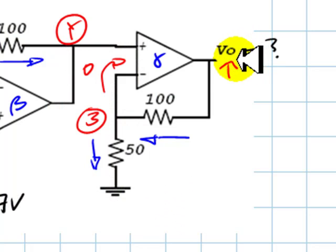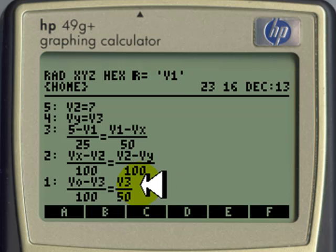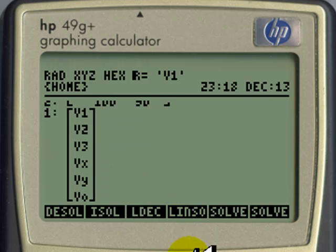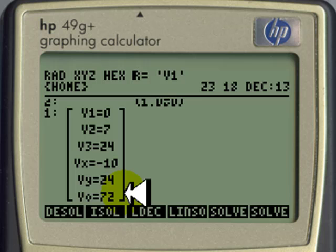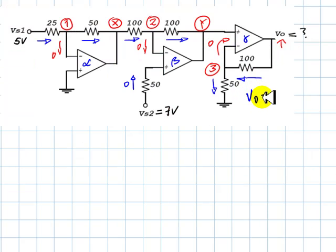Finally, KCL 3: V0 minus V3 over 100 equals to V3 over 50. And the solution is V0 is 72 volts. Thank you very much.